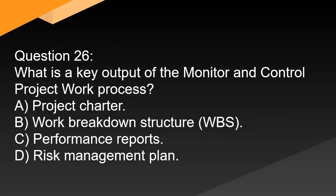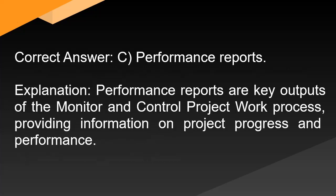Question 26: What is a key output of the monitor and control project work process? A. Project charter. B. Work breakdown structure (WBS). C. Performance reports. D. Risk management plan. Correct answer: C. Performance reports. Explanation: Performance reports are key outputs of the monitor and control project work process, providing information on project progress and performance.